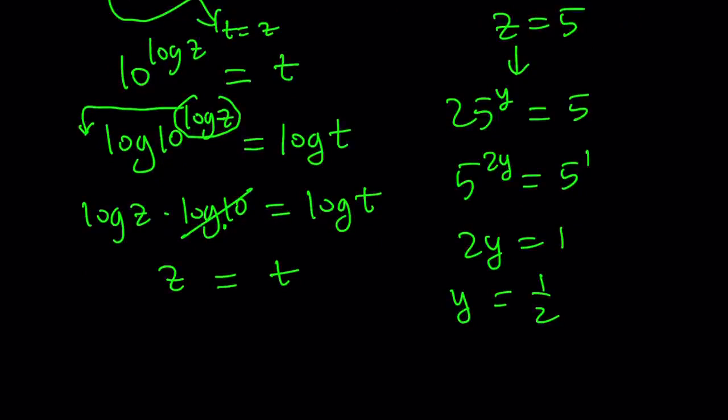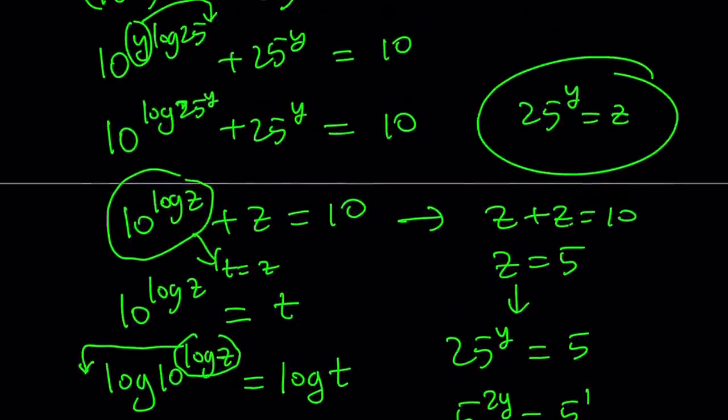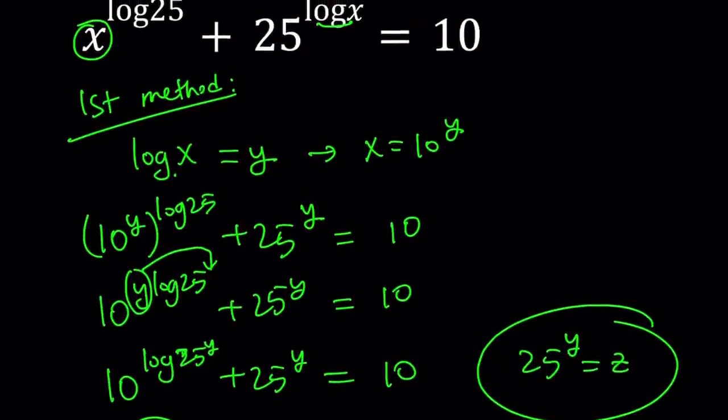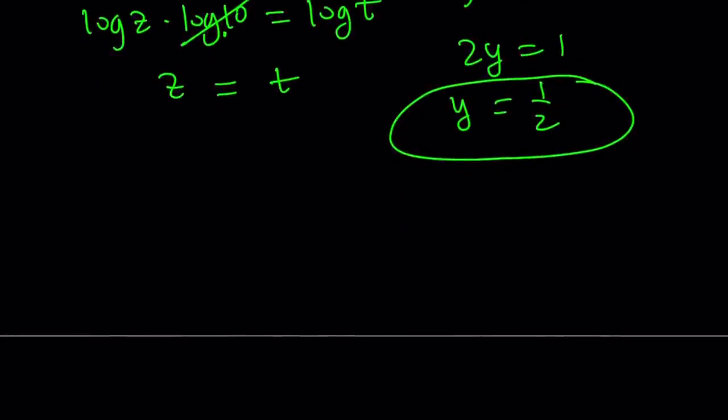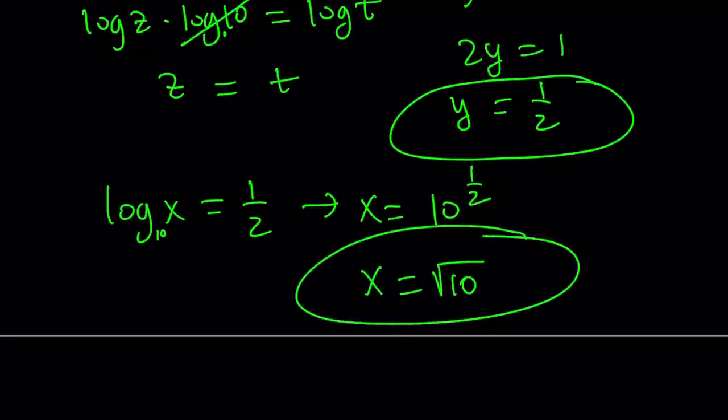I hope you don't mind me skipping that single step, which is 5 to the second to the y. And now here, 2y is equal to 1, and y is equal to 1 half. Again, we're not done yet because we're going through so many loops, I know that. And we're just going to back substitute. y is equal to 1 half, but what is y? And why did we call that y? So y is equal to log x. Let's go back here. So y is equal to log x. This means log x is equal to 1 half.